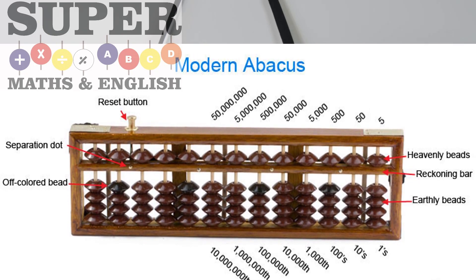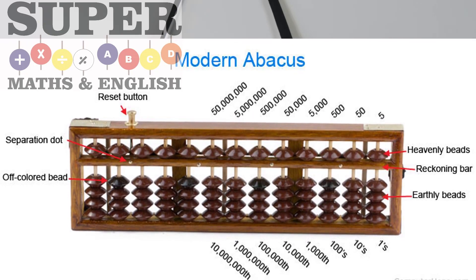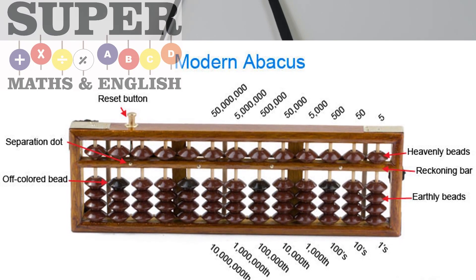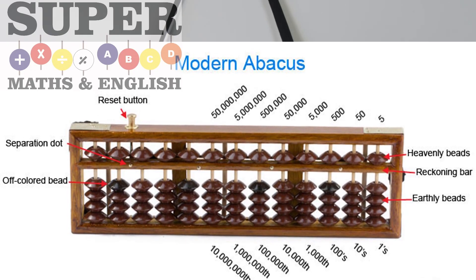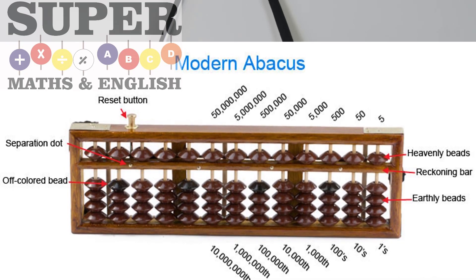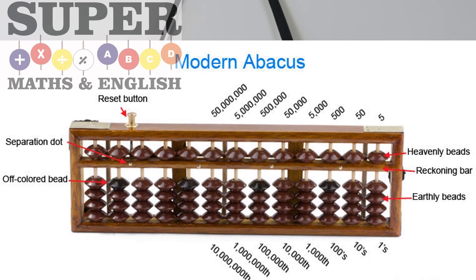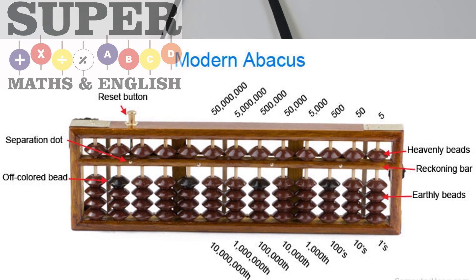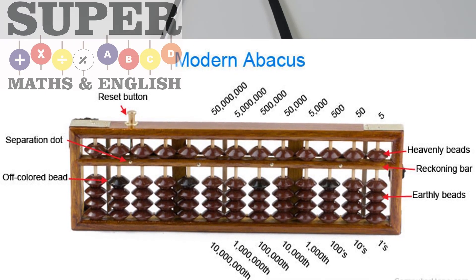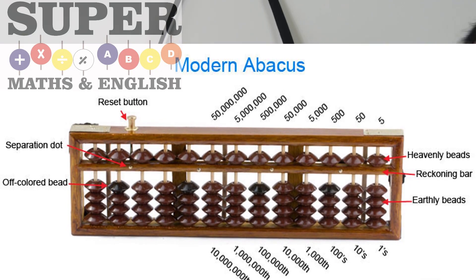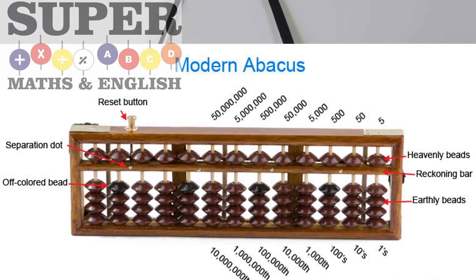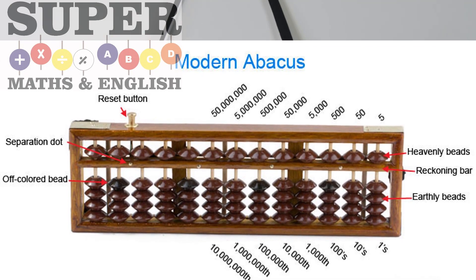The way the abacus works: the upper beads we are going to count as fives, and then keep adding tens — so five, fifty, five hundred, five thousand, fifty thousand, five hundred thousand, five million, and so on. These upper beads are counted like that.